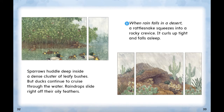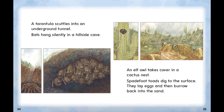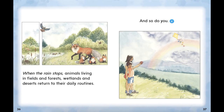When rain falls in a desert, a rattlesnake squeezes into a rocky crevice — it curls up tight and falls asleep. A tarantula scuttles into an underground tunnel. Bats hang silently in a hillside cave. An elf owl takes cover in a cactus nest. Spadefoot toads dig to the surface, lay eggs, and then burrow back into the sand. When the rain stops, animals living in fields and forests, wetlands and deserts, return to their daily routines. And so do you!